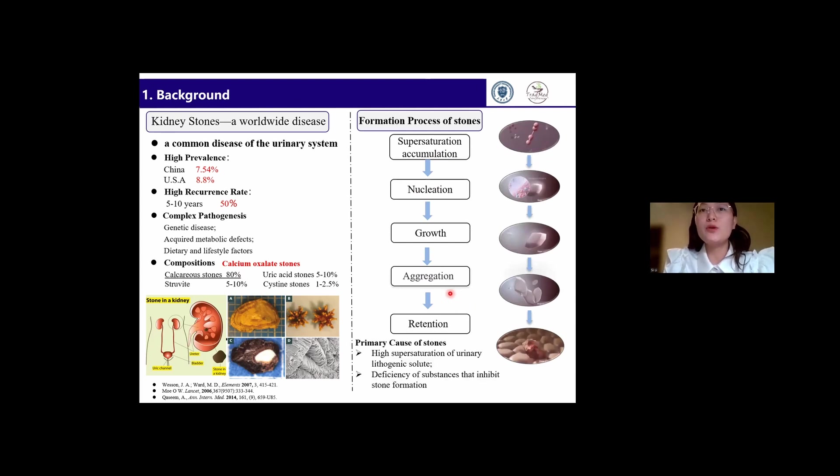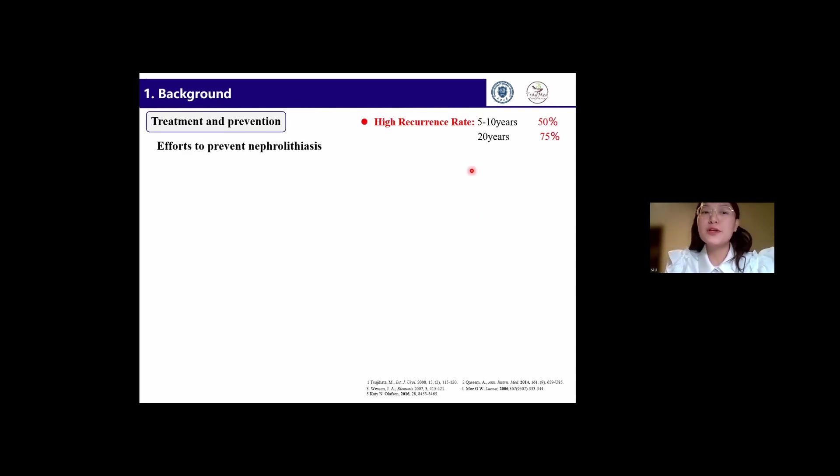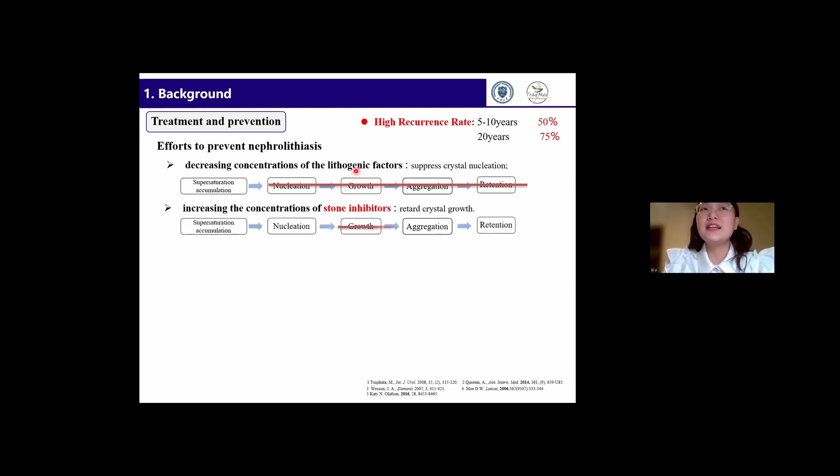That is to say the primary causes of stones are due to the high supersaturation of urinary lithogenic solute and the deficiency of substances that could inhibit the stone formation in our urine. Due to the high recurrence rate, clinical practice guidelines point out that more attention should be paid to the prevention of stone formation. They put forward two approaches: one is to decrease the concentration of lithogenic factors to suppress crystallization, and the other is to increase the concentration of stone inhibitors in our urine to retard crystal growth.